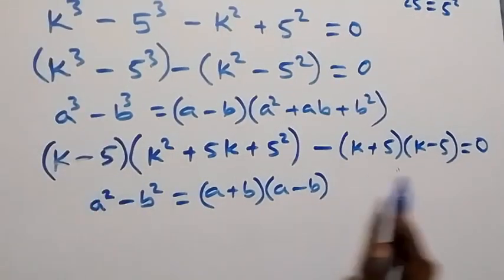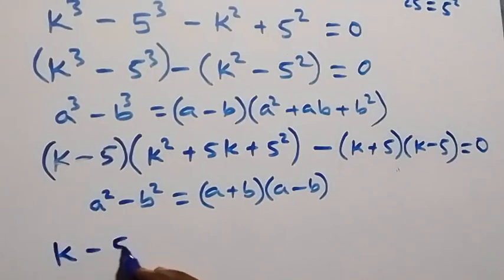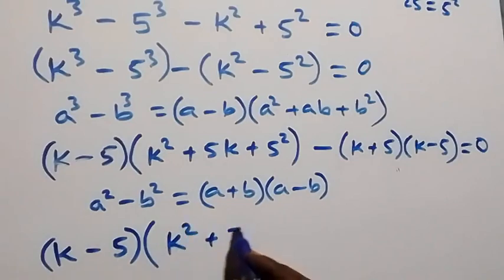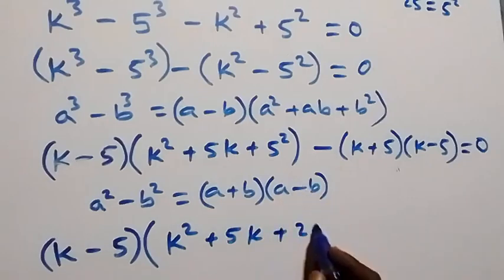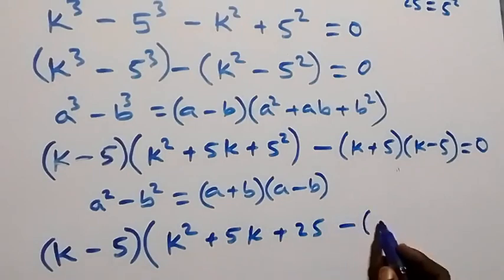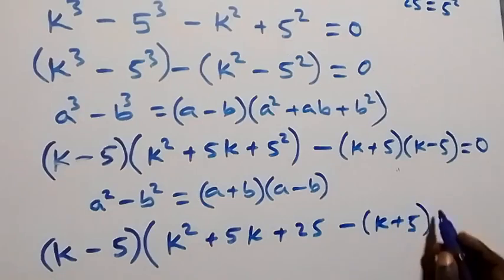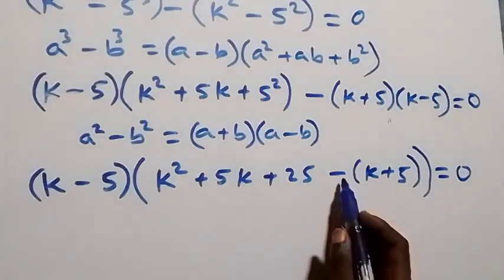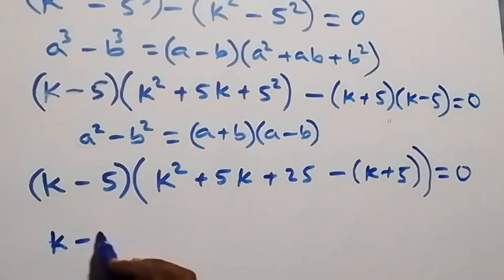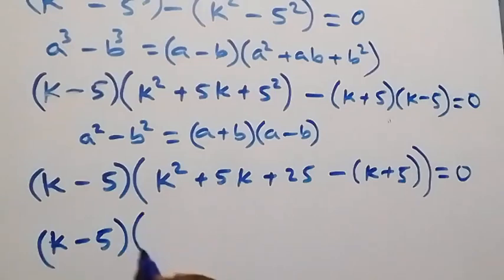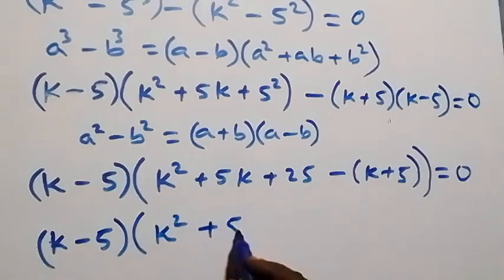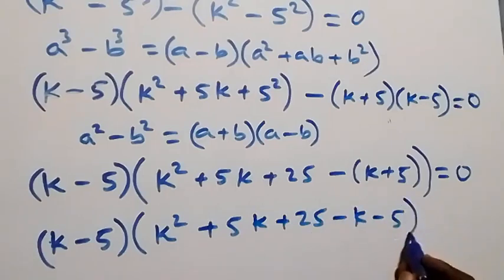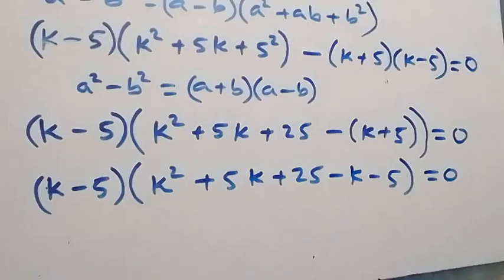From here, k minus 5 is a common factor. Factoring it out, this becomes k minus 5, times the bracket k squared plus 5k plus 25, minus bracket k plus 5, close bracket, equals zero. Opening the inner bracket gives k minus 5, times bracket k squared plus 5k plus 25 minus k minus 5, equals zero.